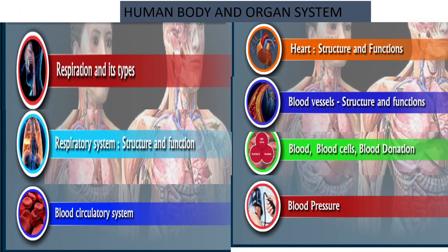In this chapter, we will study the following: respiration and its types, respiratory system structure and function, blood circulatory system, heart its structure and functions, blood vessels its structure and functions, study of blood cells, blood donation and blood pressure.